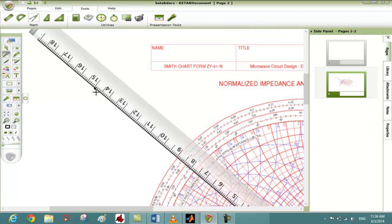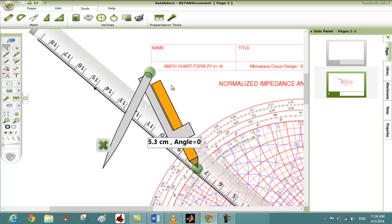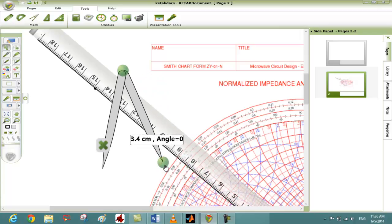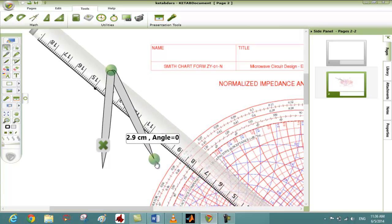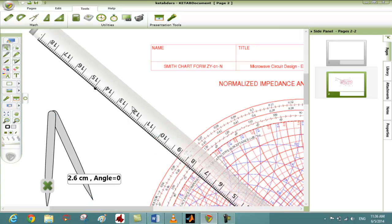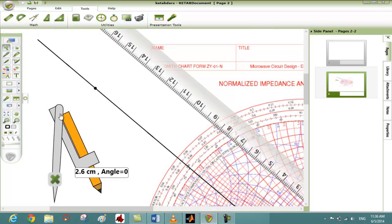Then we click on Tools and get the compass and open it to the length of the new radius value and center it on the point we marked.